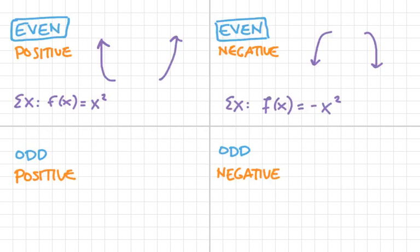Cool. So kind of similar analysis now will happen with odd. For odd, the ends are always going to do opposite things. When it's odd and positive, the end on the left will go down and the end on the right will go up. That gets flip-flopped when it's odd and negative. So odd and negative, now we're going up on the left and down on the right.